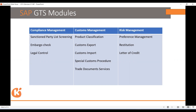In compliance: sanctioned party list, embargo, and legal controls. In customs: product classifications, customs export and imports, special customs procedures, and trade document services. In risk: preference management, restitutions, and letter of credit.